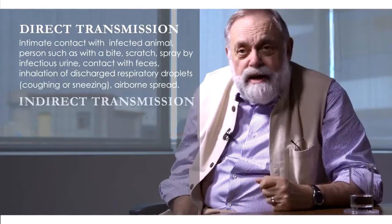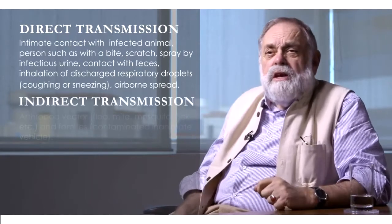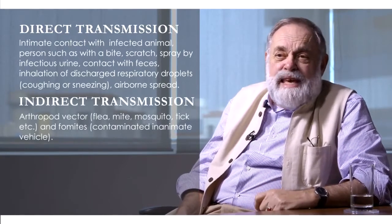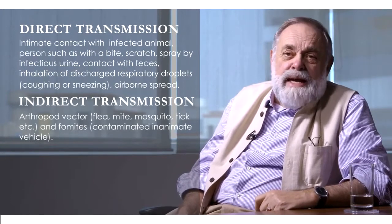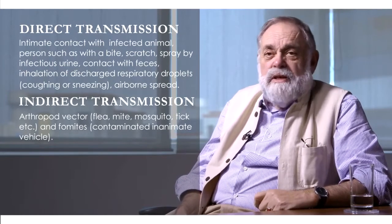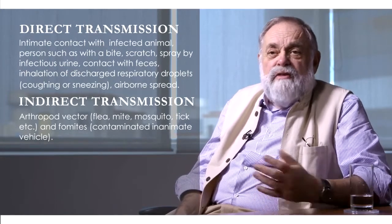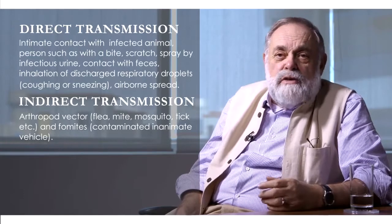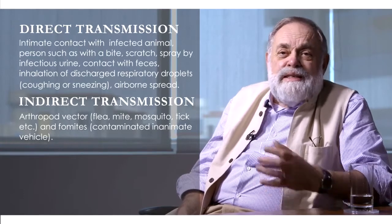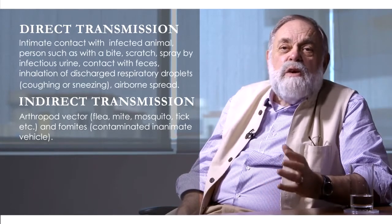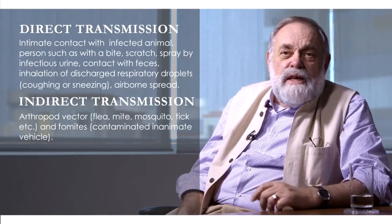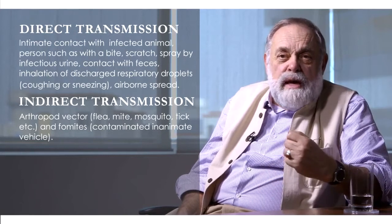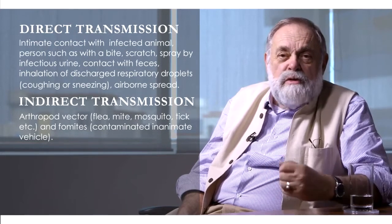Then there's indirect transmission, where there is an arthropod vector such as a flea, a mite, a mosquito, a tick, and fomites such as cockroaches, that are contaminated with the particular pathogen going from an animal to a human.